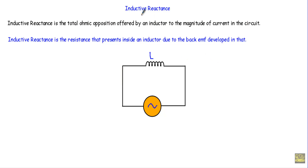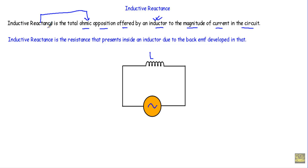In this video I will talk about inductive reactance, after which I will show a circuit simulation to give a better understanding of the concept. Inductive reactance is the total ohmic opposition offered by an inductor to the magnitude of the current in the circuit. We express inductive reactance with XL, and the unit of XL is ohm.